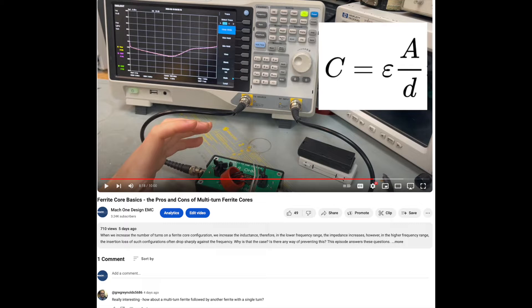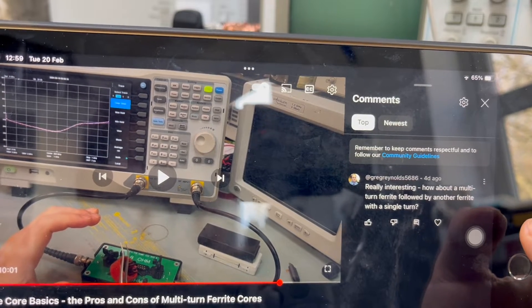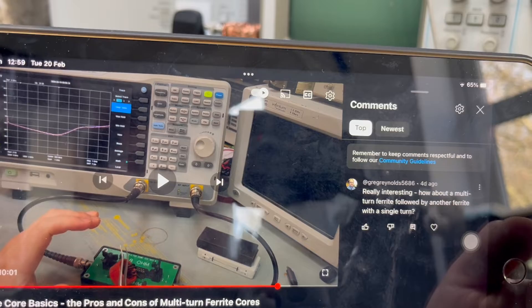Hi everyone. If you remember, there was a time we did the ferrite series where we had an episode focusing on the subject of multi-turn ferrite core. And one of the viewers, I guess his name must be Greg, said really interesting, how about a multi-turn ferrite followed by another ferrite with a single turn? So he's interested in if we have a combination of both, what would be the impact and what lessons can we draw if we know the impedance curve.